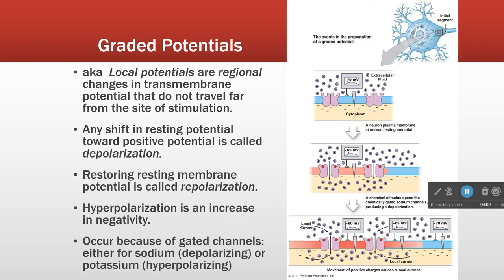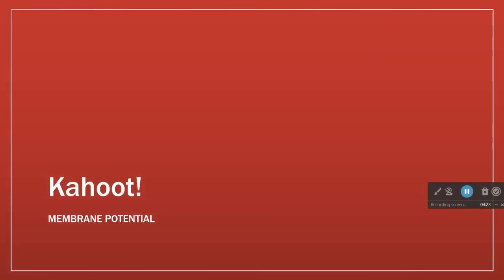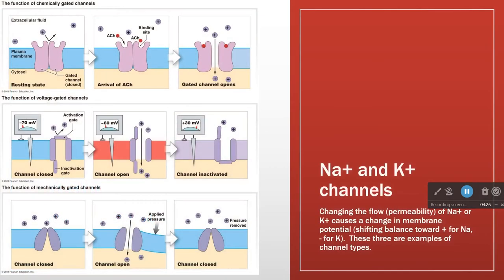All of these changes in membrane potential occur for some reason — that reason may be a gated channel. There are three examples here: a receptor-gated channel at the top, a membrane deformation channel at the bottom, and a voltage-gated channel in the middle. Voltage-gated channels play the biggest role in the action potential, but the receptor-mediated channels are what get things going in the first place.